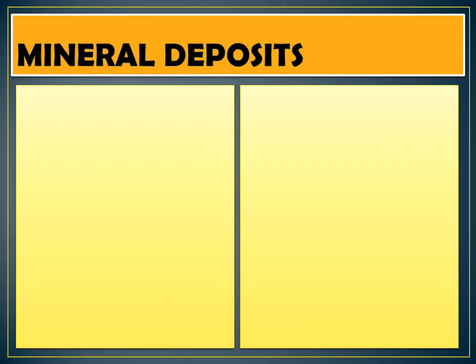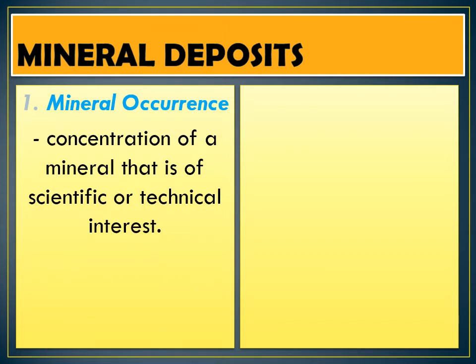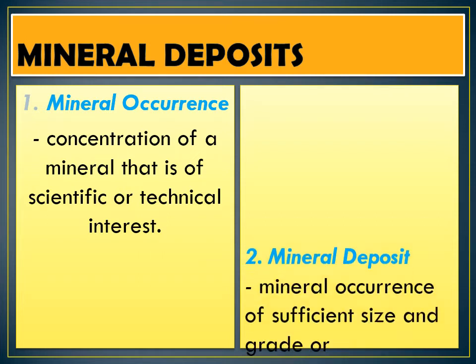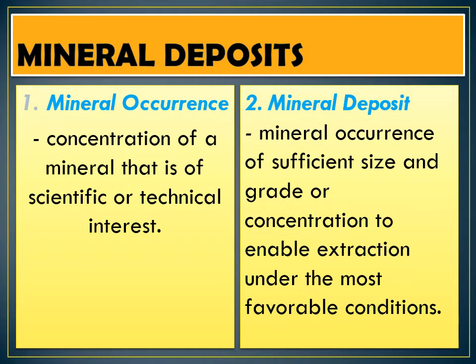Moving on, here are some terminologies that we must familiarize when talking about mineral deposits. First is mineral occurrence. This talks about the concentration of a mineral that is of scientific or technical interest, or in layman's term, this refers to any locality where a useful mineral is found. Another is mineral deposit. This refers to the mineral occurrence of sufficient size and grade or concentration to enable extraction under the most favorable condition — meaning it talks about the mineral that we can mine.